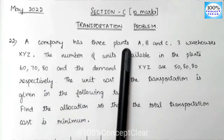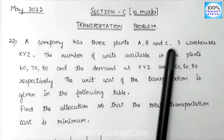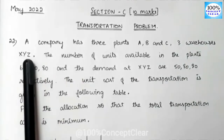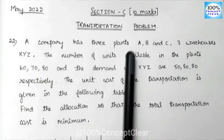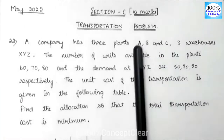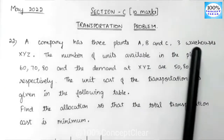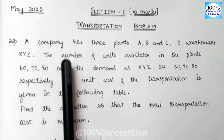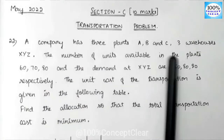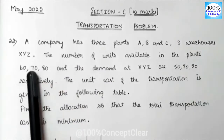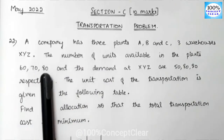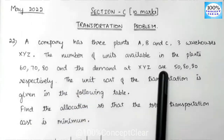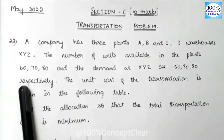A company has 3 plants A, B and C, and 3 warehouses X, Y and Z. The number of units available in the plants are 60, 70 and 80. The demand at X, Y, Z are 50, 80 and 80 respectively.